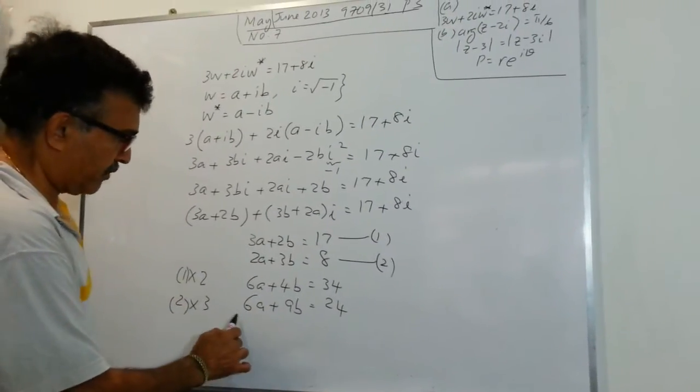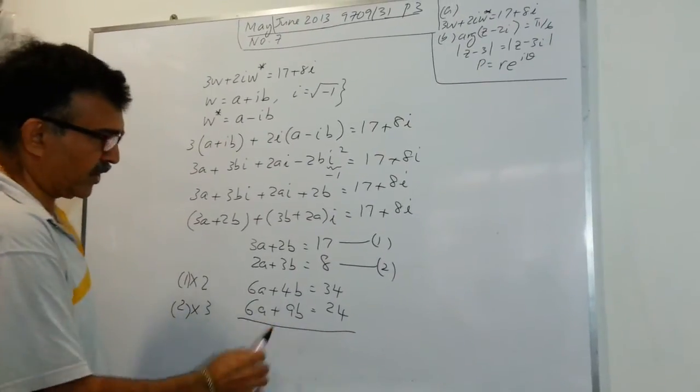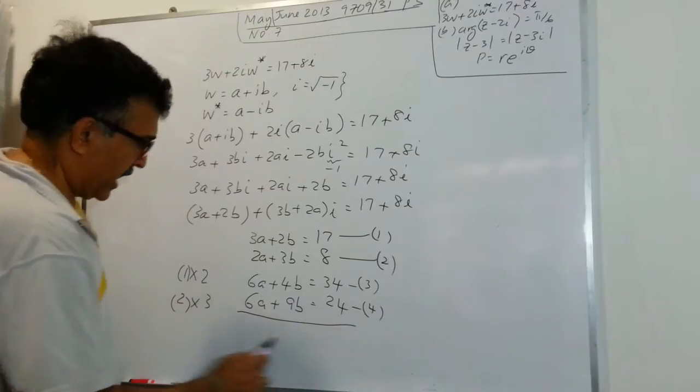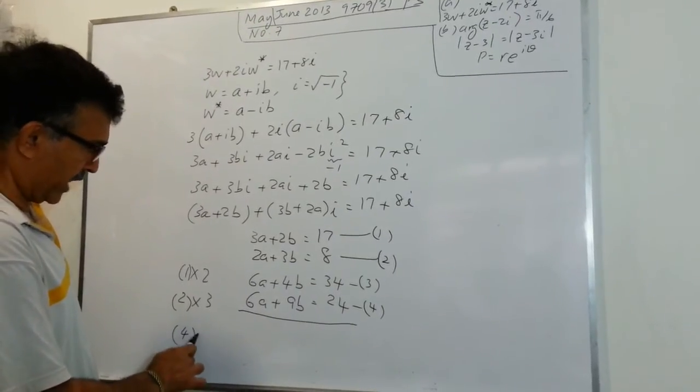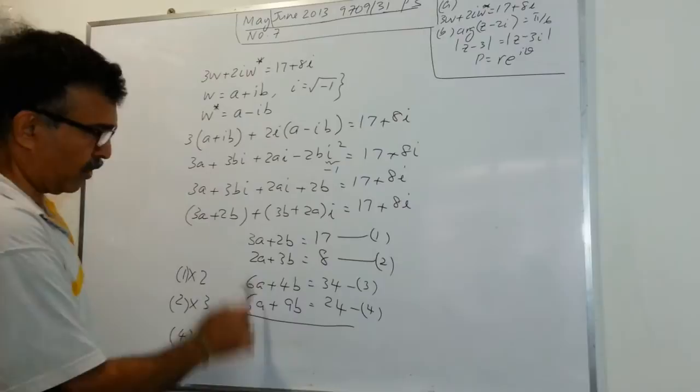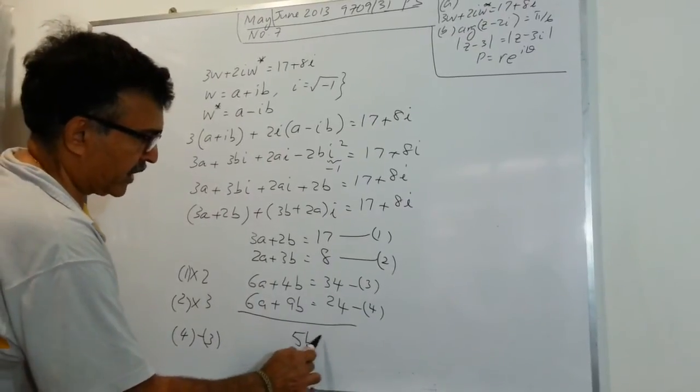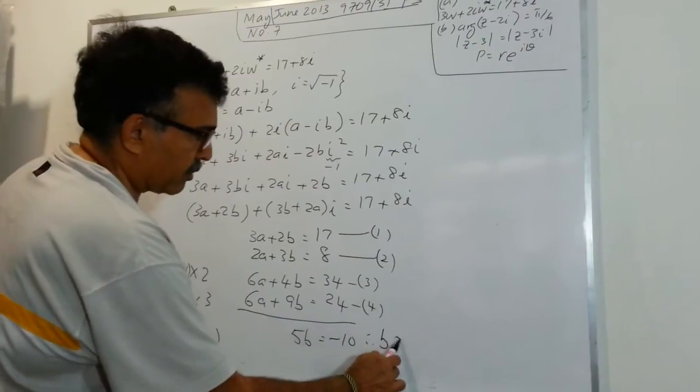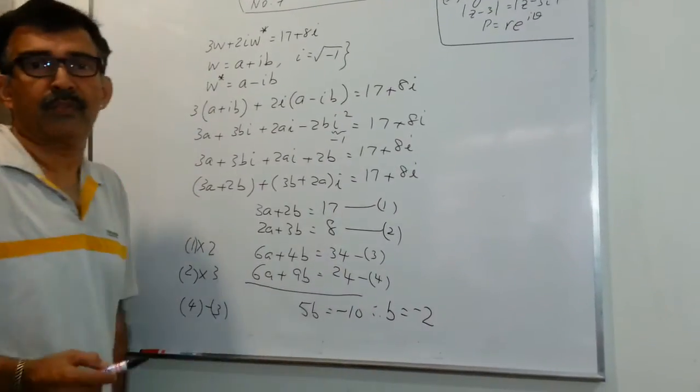So now, just take 1 minus the other. If you like, you can call this 3 and you can call this 4. And if we take 4 minus 3, we will have 5B equals to negative 10. Therefore, B equals to negative 2.